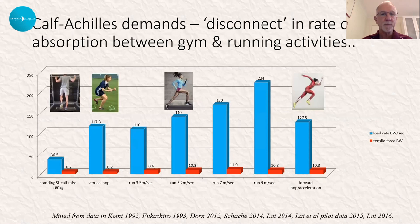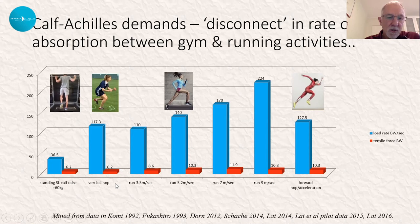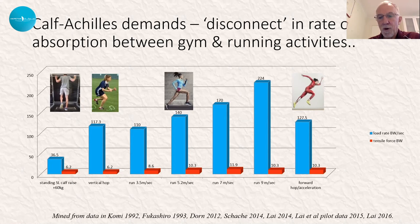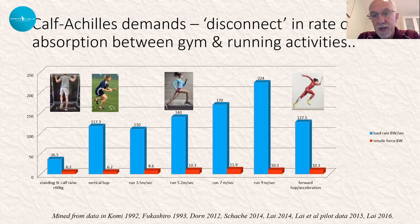If we look at things such as a vertical hop or running at 3.5, 5, 7, and 9 metres per second, and the tensile forces placed on the calf, we see progression from around 6.2 body weights at the calf-Achilles complex peaking at around 12 body weights running at 7 metres per second, actually dropping away a little at the highest speeds. Looking at loading rates, whether hopping or running very slowly, loading rates are very similar, rising asymptotically as we approach sprinting speeds.